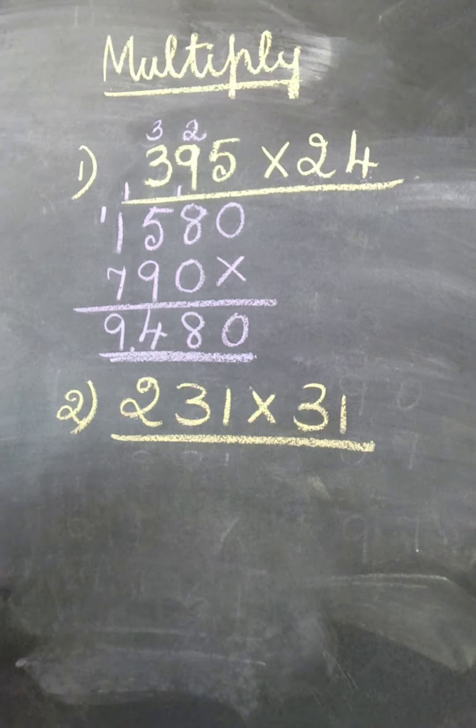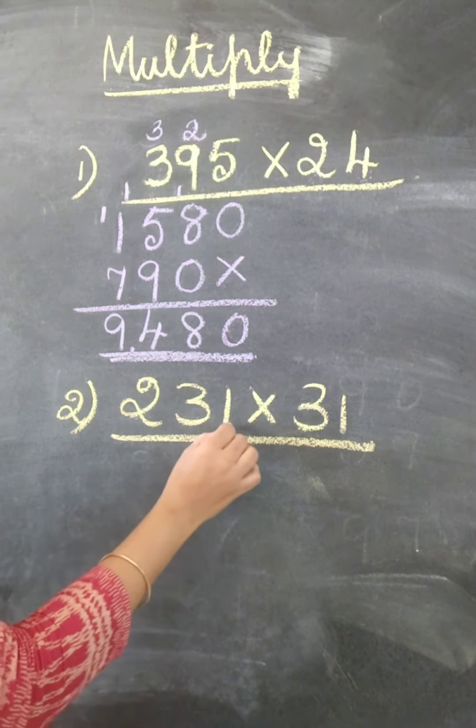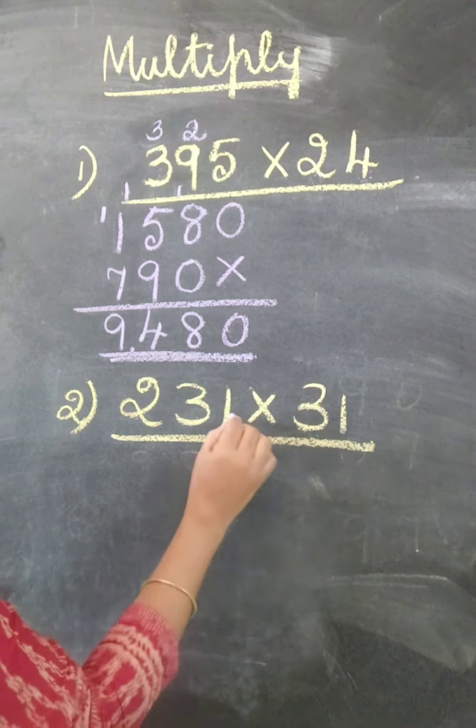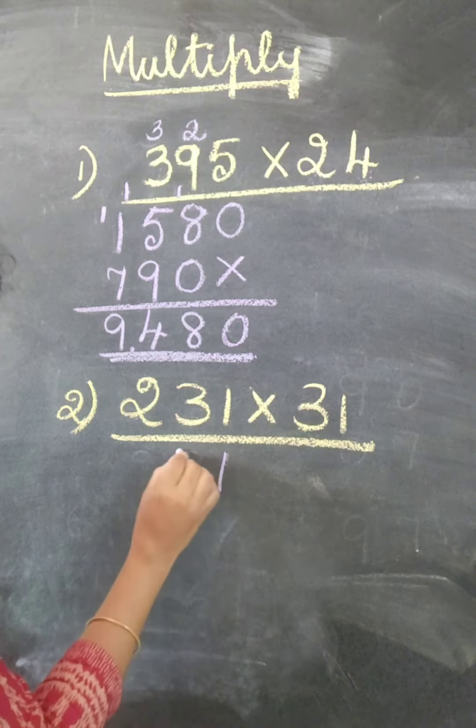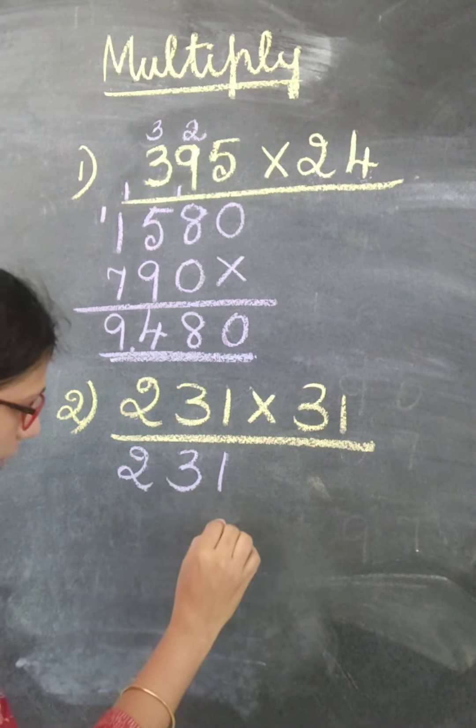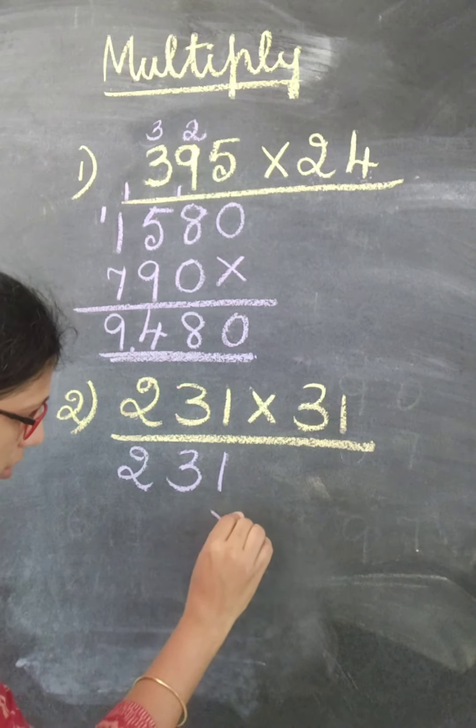Let us do one more sum. 231 multiply by 31. 1 times 1 is 1, 1 times 3 is 3, 1 times 2 is 2. So again here we have to put a cross mark.